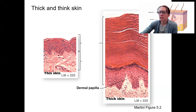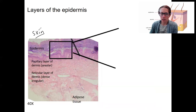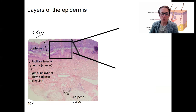Let's look at these layers. This should be nothing new — these are the layers of the skin overall: the epidermis, the dermis made up of two different layers, and the adipose tissue, which is also called the hypodermis, not actually part of the skin itself.